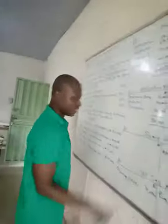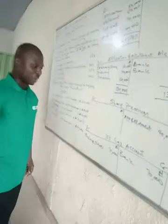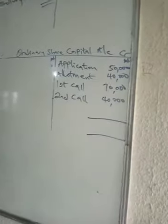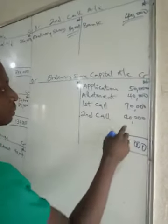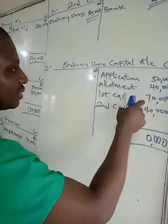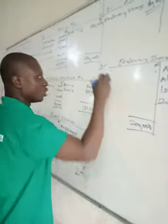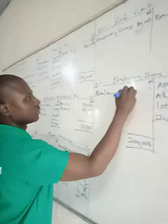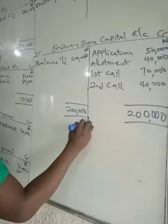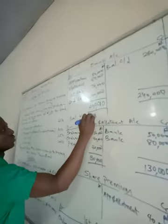You just record it like that, and if you want to close it, you can call it balance carried down — it's a liability going to the liability side of the balance sheet. The other accounts are now balanced. The ordinary share capital account totals ₦200,000 at the end of the day — that's the nominal share capital. Balance carried down: ₦200,000. Balance brought down: ₦200,000.